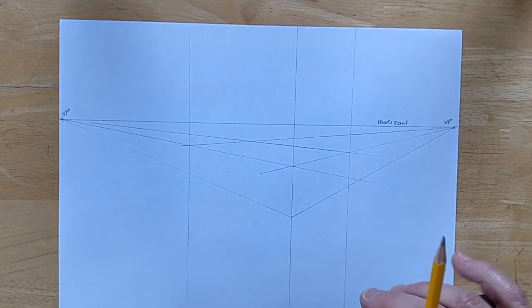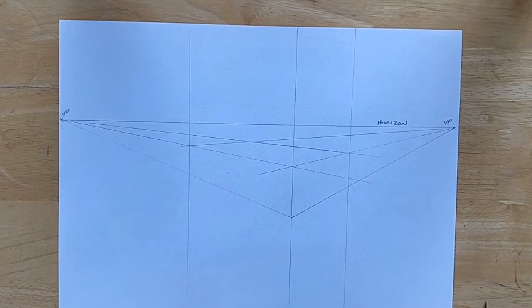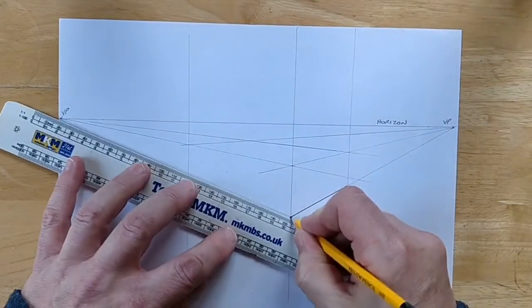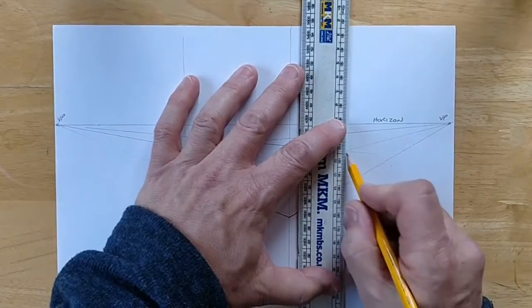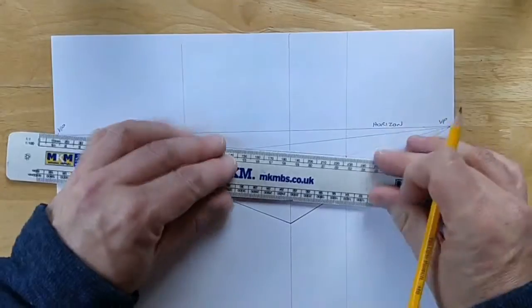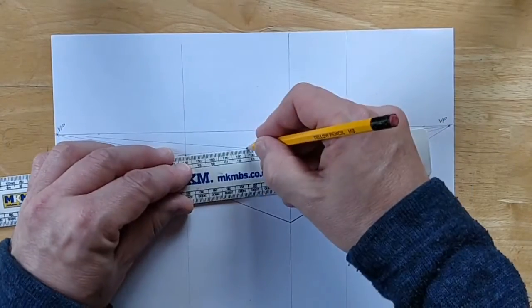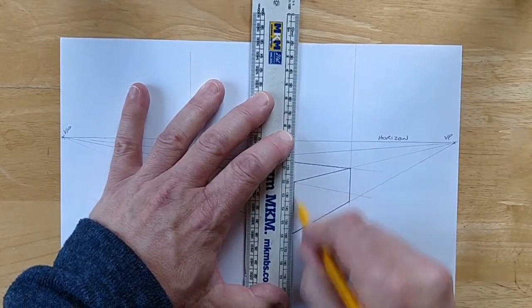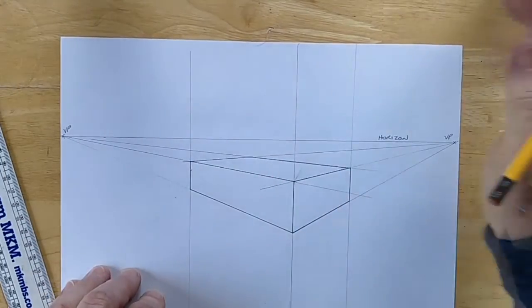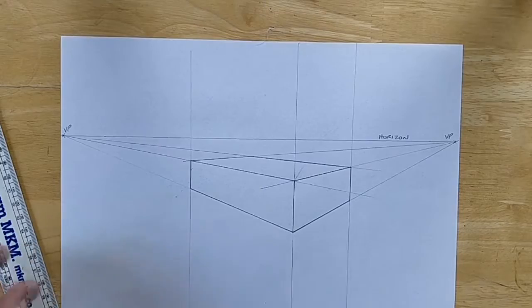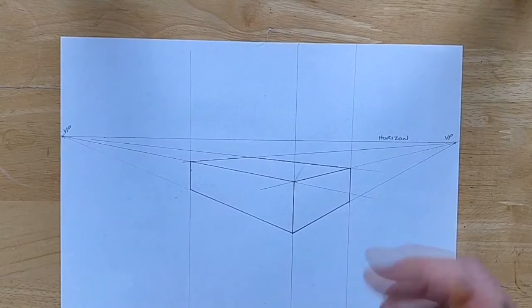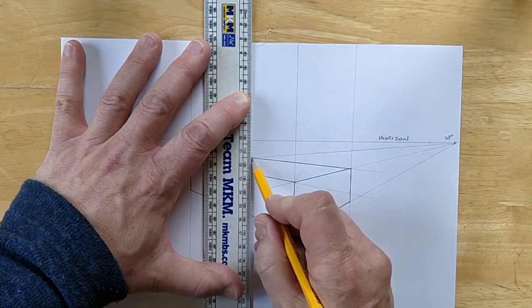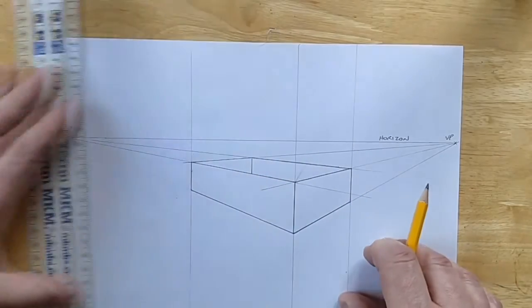I'm just going to go over that now and make the lines a bit heavier so the drawing looks a bit sharper. There we go, we can clearly see the outline of the box now in front of us. I'm going to just put in the inside back edge so that it looks like it might be an open box. Like that.